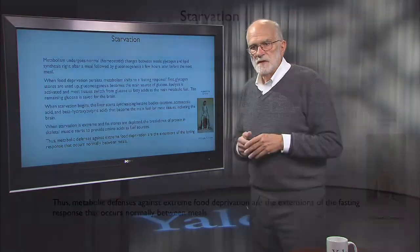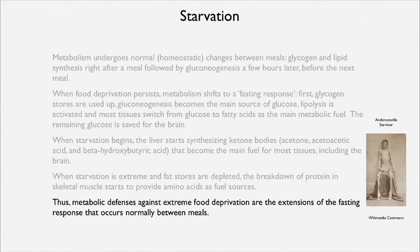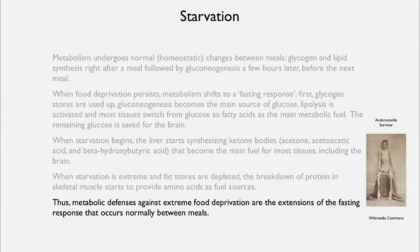The illustration here, which probably looks like a person who might have survived a concentration camp in the Second World War, is actually from a Civil War concentration camp called Andersonville. It was in the south, and this is a northern soldier who has managed to survive cholera and starvation there. It shows you just how much can be taken out of a human body without that person dying.